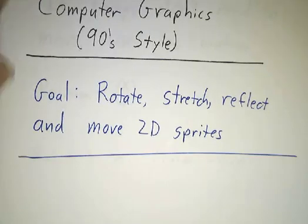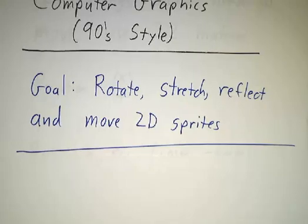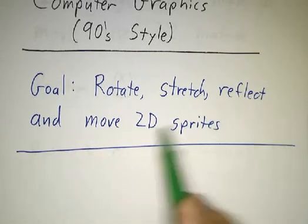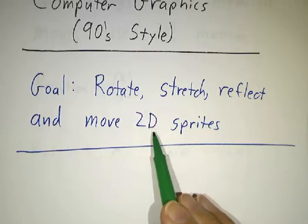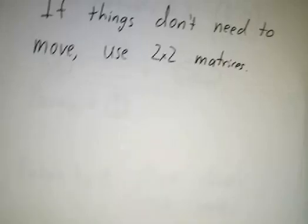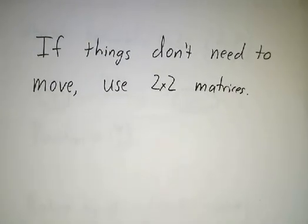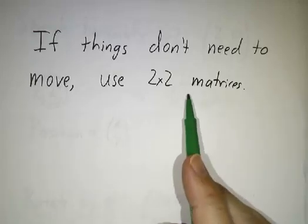Okay, so our first goal is to come up with a way to take some object and either rotate it, or stretch it, or reflect it, or move it around. These are two-dimensional objects working in the two-dimensional plane. Now, the simplest case is when everything sits at the origin and you don't need to move things around. In that case, you can do everything using 2x2 matrices.